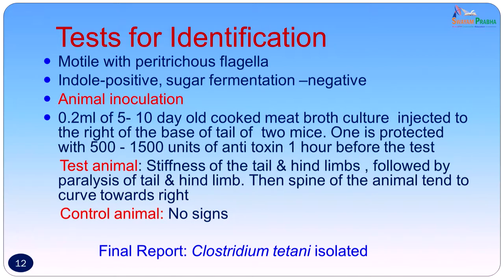Confirmation was done by animal inoculation because it was important to demonstrate the toxin. 0.2 ml of a 5- to 10-day-old cooked meat broth culture was injected into the base of the tail of two mice; one was protected with 500 to 1500 units of antitoxin one hour before the test. The test animal developed stiffness of the tail and hind limb followed by paralysis, and the spine tended to curve towards the right. No signs were seen in the control animal protected with antitoxin. The final laboratory report was: Clostridium tetani isolated.